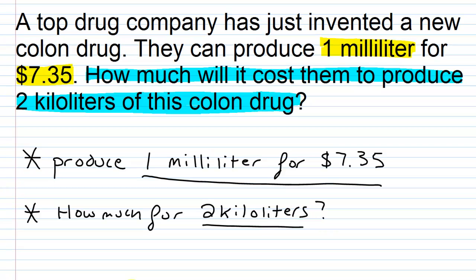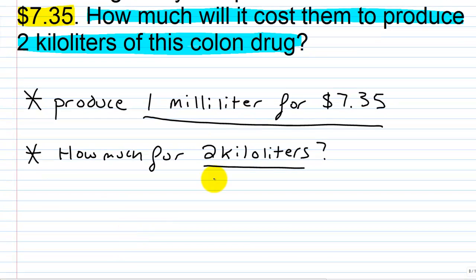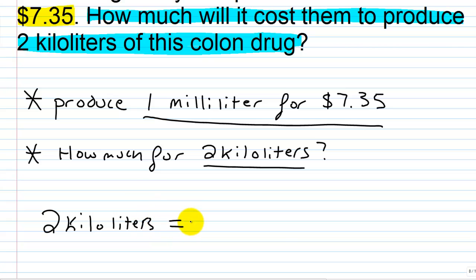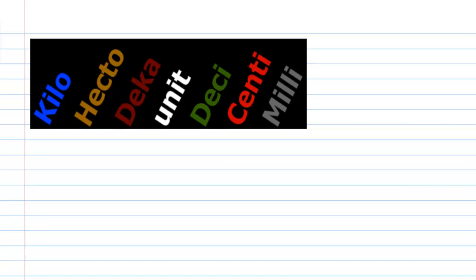It's basically going to be a two-step procedure to solve this. We're going to go from two kiloliters to an equal amount of milliliters. To convert from two kiloliters to milliliters, we use a prefix chart. We go down to the prefix chart and find kilo and find milli.